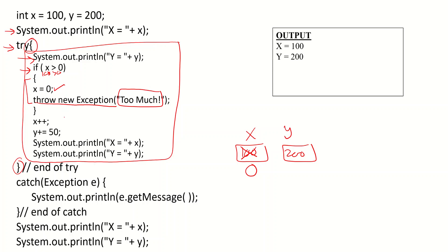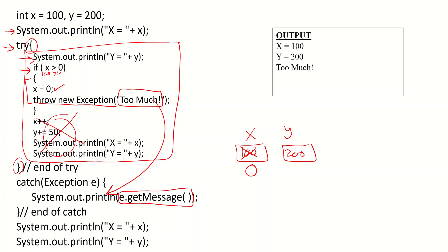You will notice that we have many statements here within the try, but we should not execute any of them because we have an exception. The exception will exit the try block and go to the catch. Within the catch, we have one statement — e.getMessage — which outputs the message 'too much'.